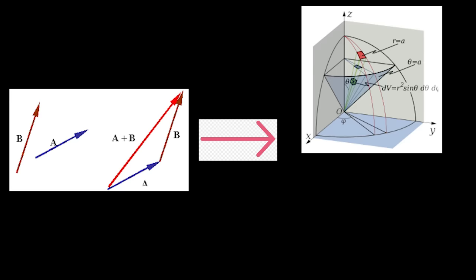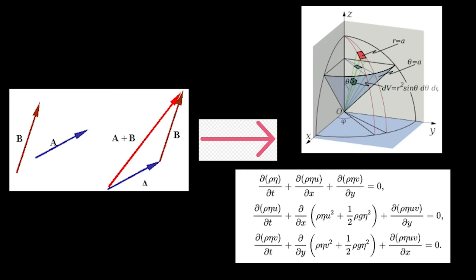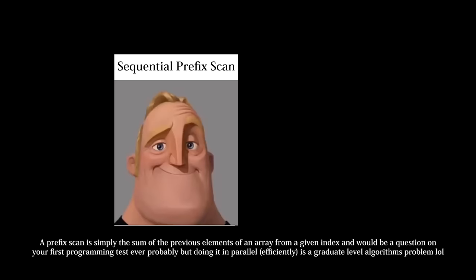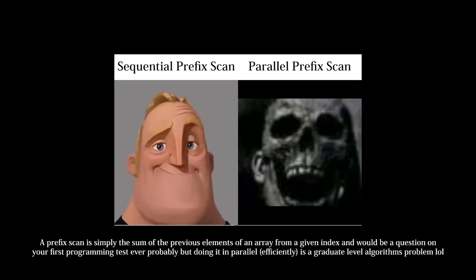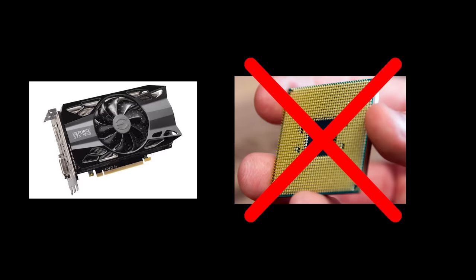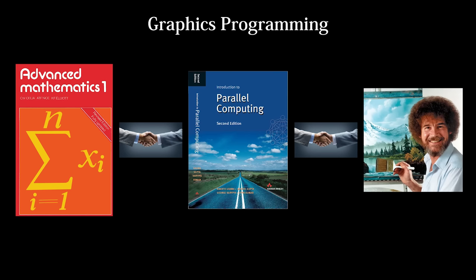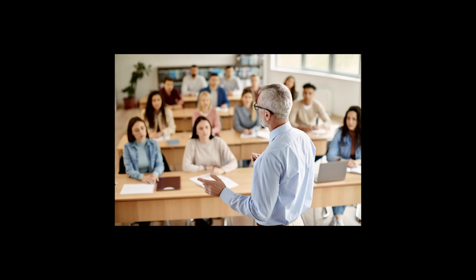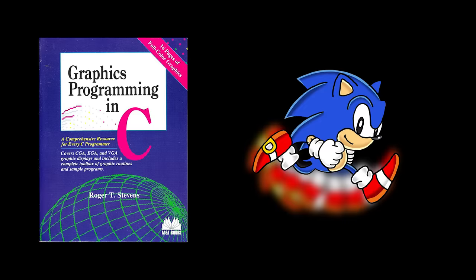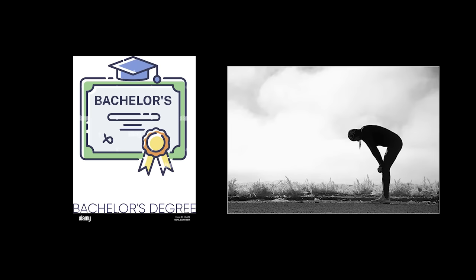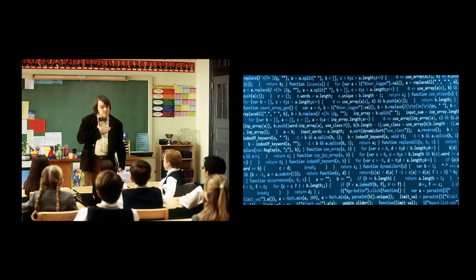The math ranges from simple linear algebra to multi-dimensional calculus and applied differential equations. The computer science is difficult because parallel algorithms are often far more complicated than their sequential counterparts, and you have to learn how to program a device that functions very differently from the CPU. Graphics programming also struggles to be taught in an undergraduate setting because the field changes so often that school curriculums can't really keep up. It's also so niche and specialized that asking a college professor to make a relevant graphics class is like asking the high school English teacher to make a programming class.